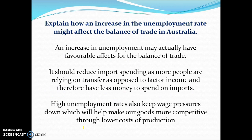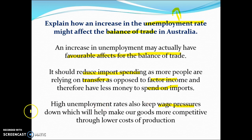Explain why an increase in the unemployment rate might affect the balance of trade. An increase in unemployment can actually have favorable effects for the balance of trade, because it should reduce import spending — as more people rely on transfer payments rather than factor income, they have less money to spend on imports. It also keeps wages down and keeps inflation down, which makes us more internationally competitive through lower costs of production. So higher unemployment generally leads to a lower current account deficit because we don't spend as much on imports.